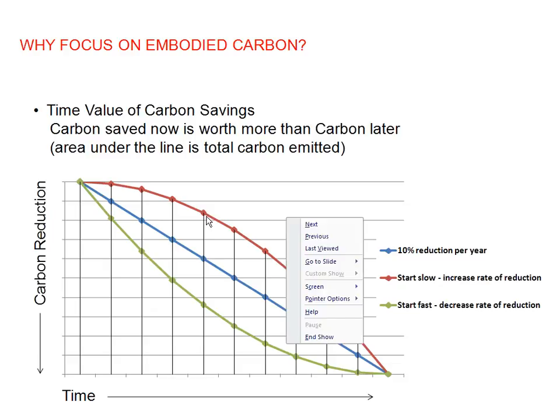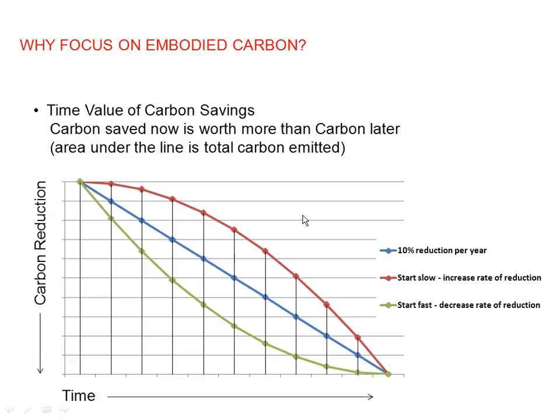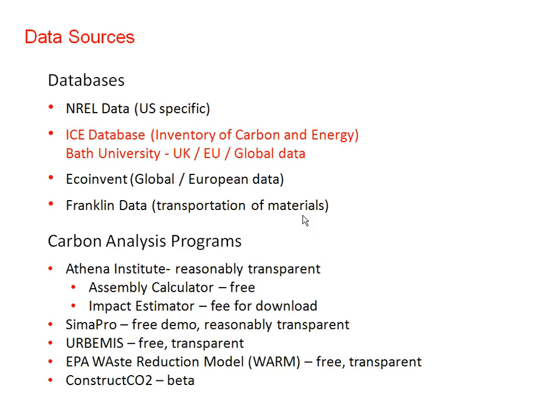Here are some of the sources where this data comes from. The one I highlighted and use the most is the ICE database out of Bath, England. Analysis programs like Athena are difficult to use unless you're evaluating standard assemblies and standard buildings — our buildings are never very standard, so we couldn't make it work. There are a lot of resources out there. I just stuck with something that was a checklist where you could look up each material. It's not going to be 100% accurate, but it's good enough for the kind of analysis we're doing right now. That's the end of my presentation and I'll answer questions at the end.